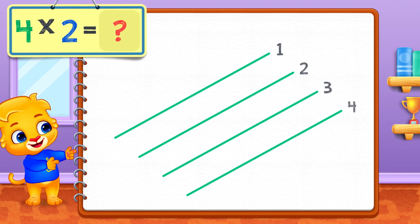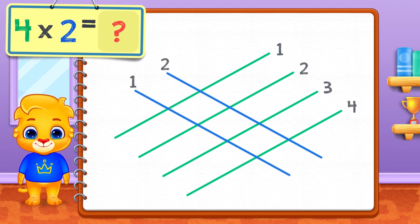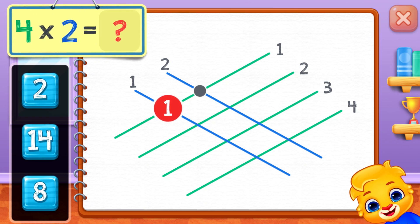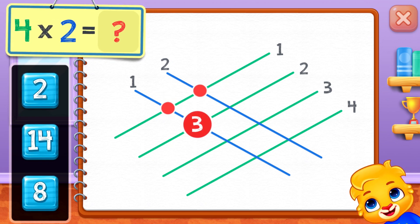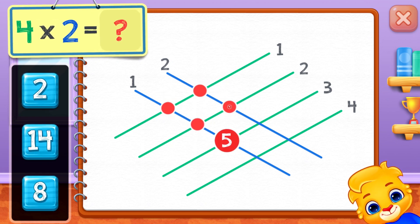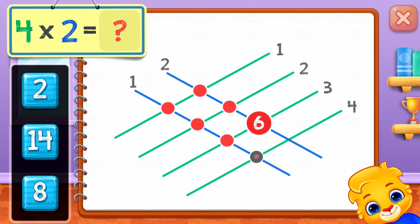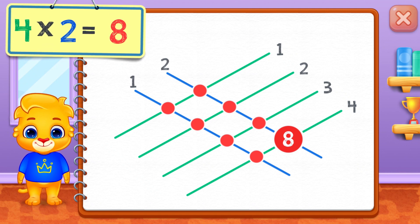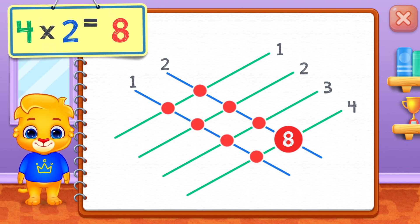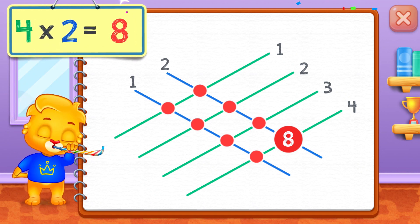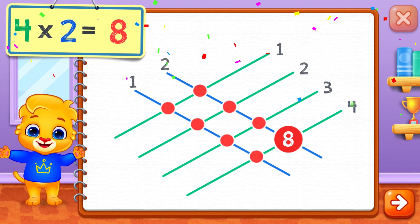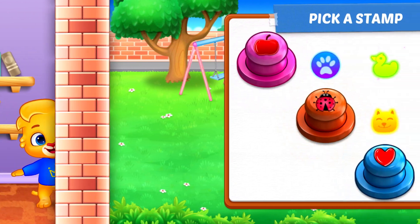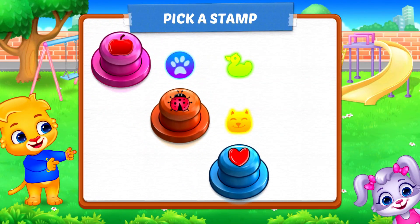Four times two equals — one, two, three, four, five, six, seven, eight. Four times two equals eight. Pick a stamp!